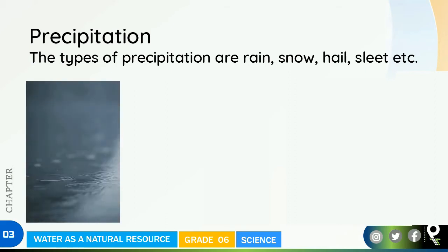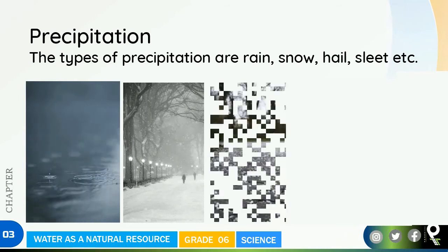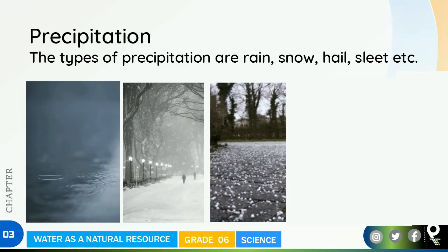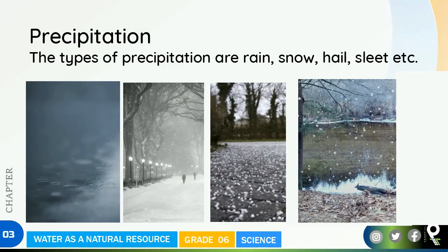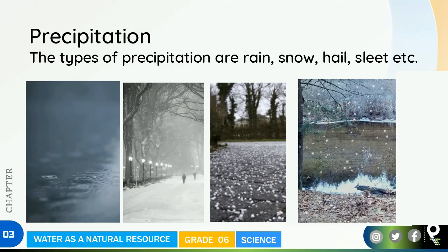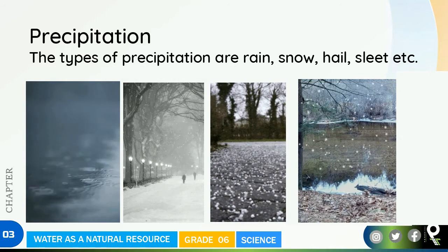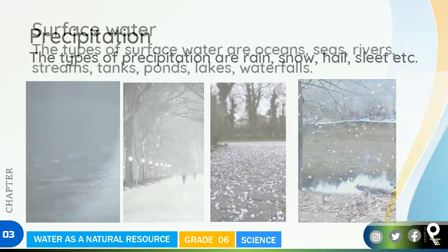The types of precipitation are: rain, snow - that is also a kind of precipitation - hail, where hail storms happen like rocks falling down. Have you ever felt it? I've experienced it in some countries including Sri Lanka. And sleet - sleet drops are much bigger than snowdrops. These are some of the types of precipitation.